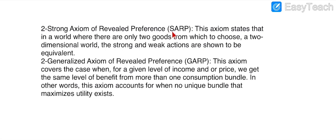The second axiom is the Strong Axiom of Revealed Preference, abbreviated SARP. This axiom states that in a two-dimensional world — when there are only two goods from which to choose — the Strong Axiom and the Weak Axiom are shown to be equivalent.